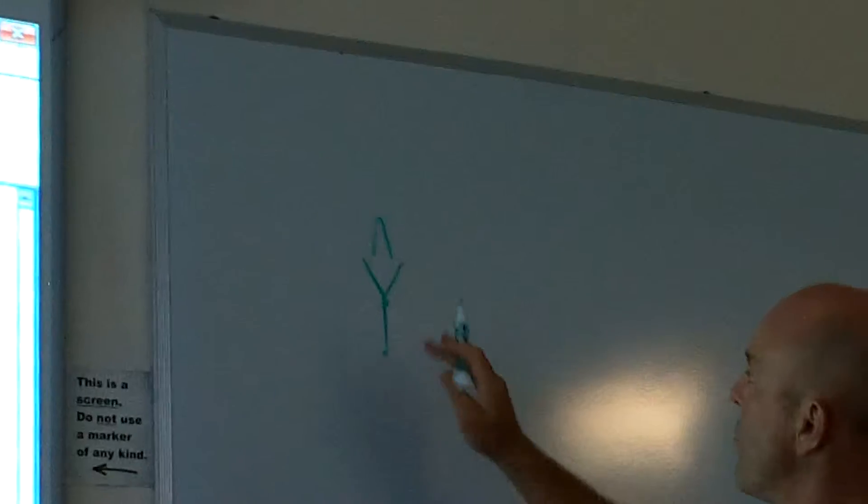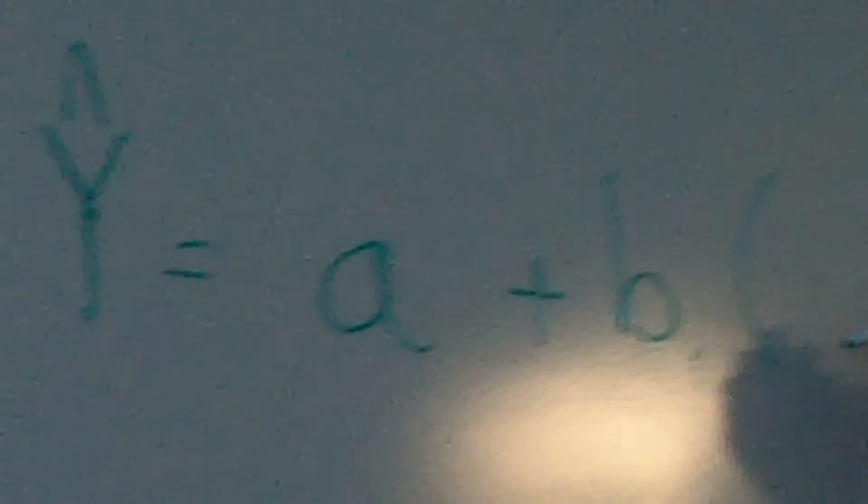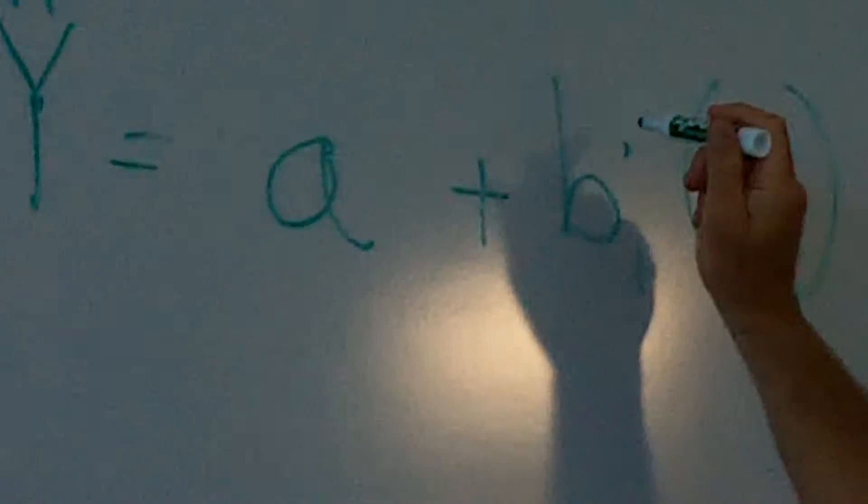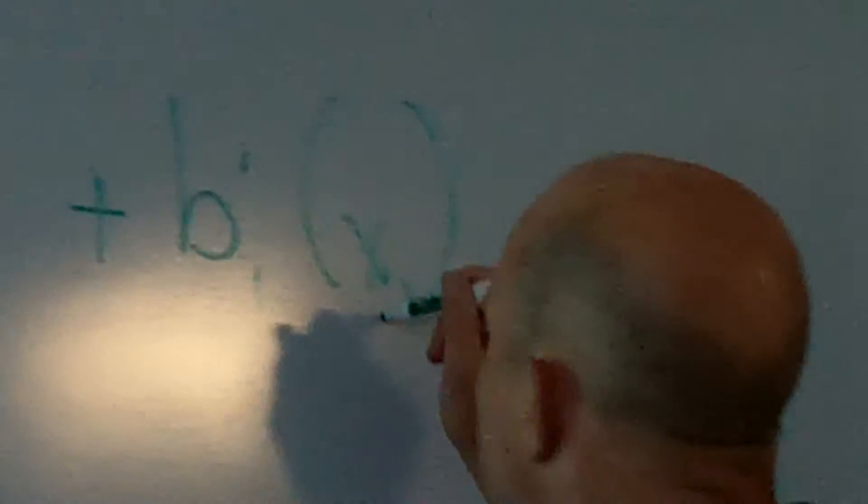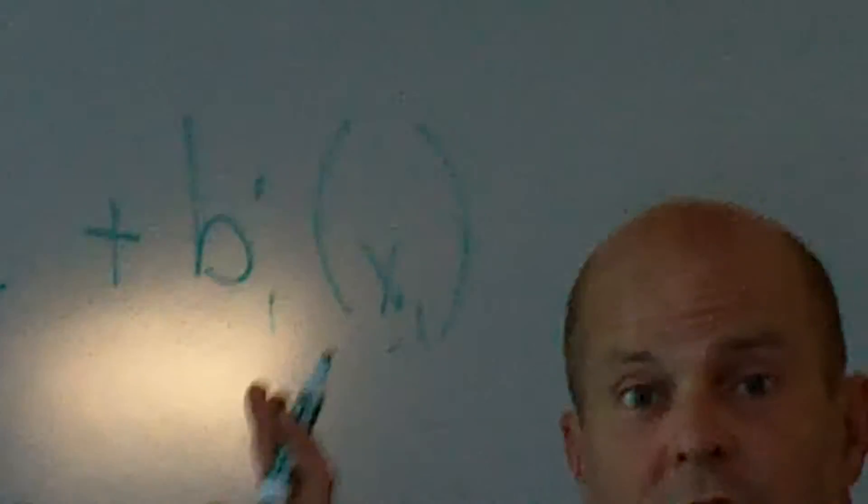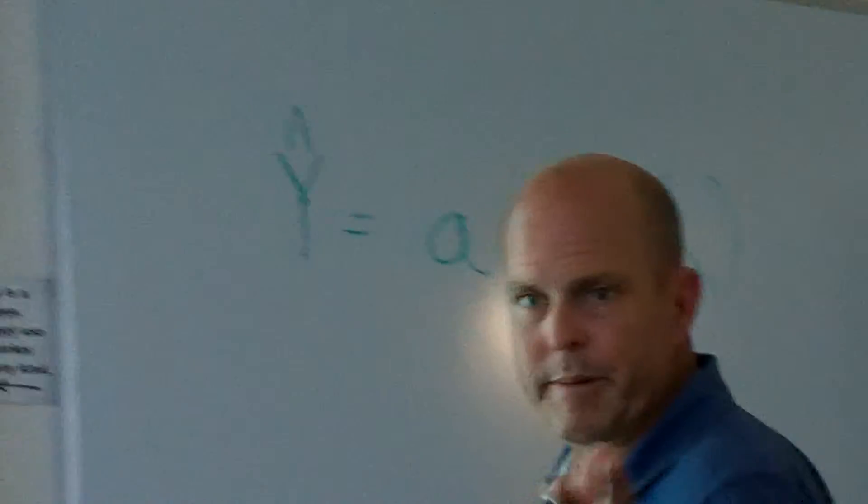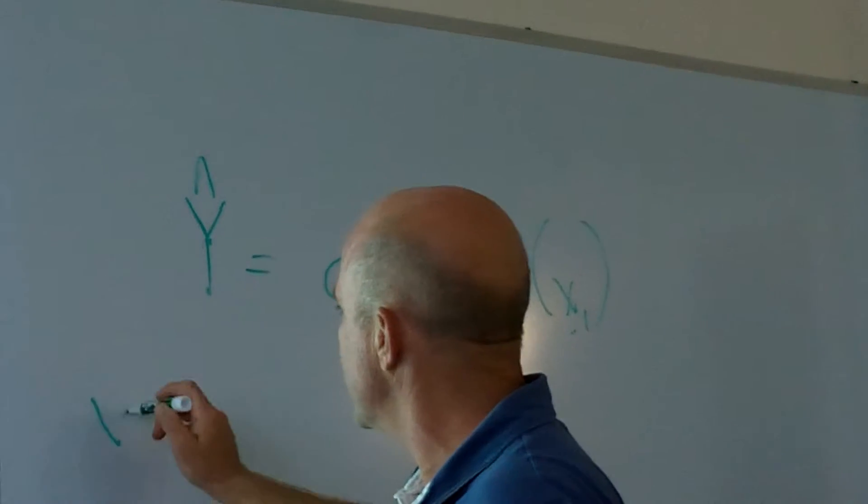We'll use a green one. We've got some Christmas colors over here. Y hat—this is y hat, which means a prediction. Y hat equals alpha plus beta one x one. This is the regression coefficient. And this is some value that you're going to substitute in for your first independent variable. Let me show you how it works and I think it'll make more sense.